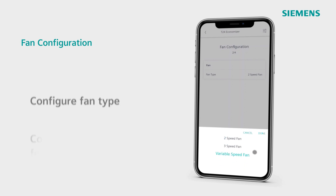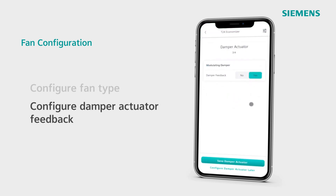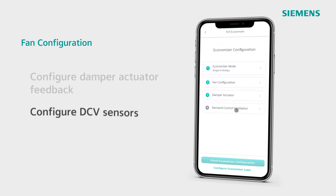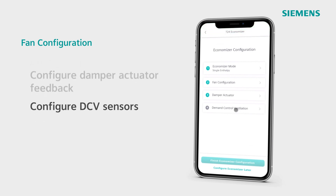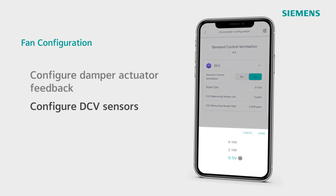Then select the damper actuator to adjust whether there is damper feedback. Finally, for the Economizer configuration, we can configure demand control ventilation, choosing the signal type for your sensor and the ranges you would prefer to keep your CO2 measurements within.